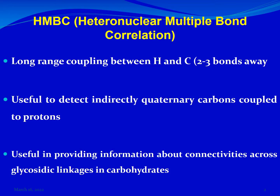HMBC is a two-dimensional, heteronuclear technique that shows multiple bond correlation. In other words, HMBC shows long-range couplings between proton and carbon-13, where these protons and carbon-13s may be two to three bonds away from each other. This means HMBC can provide information about protons coupled indirectly to quaternary carbons that may be two or three bonds away from the particular proton.